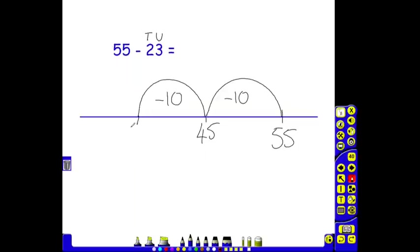45 take away 10 is 35. So, so far, I've taken away my two 10s. I've now got three units to take away. Again, different abilities in children could apply here, and some children might decide to do one, two, three to get to their final answer. 35 take away 3 is 32.